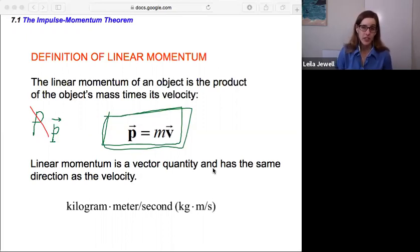So another thing to note is this is a vector quantity. We have vector symbols over the momentum as well as the velocity. And because we have vectors over both, the linear momentum has the same direction as the velocity. So if the velocity is going one way, the linear momentum is going that way too. What are the units of linear momentum? We don't have any fancy units for them. It's just mass times velocity. So mass is in units of kilograms times our units of velocity, meters per second.